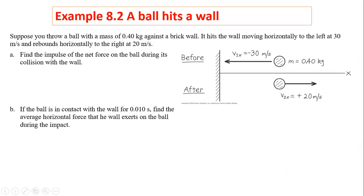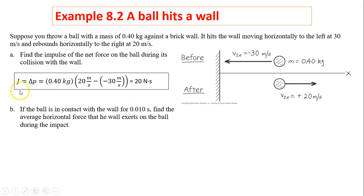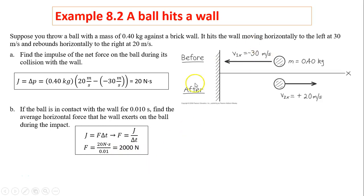Example: a ball with mass 0.4 kg hits a brick wall moving horizontally to the left at 30 m/s and rebounds to the right at 20 m/s. Find the impulse on the ball. Taking right as positive: vi equals negative 30, vf equals positive 20. J equals delta p equals m(vf − vi) equals 0.4 times (20 − (−30)), giving 20 N·s. For part B, if contact time is 0.010 s, average force equals impulse divided by time: 20 divided by 0.010 equals 2000 N to the right.